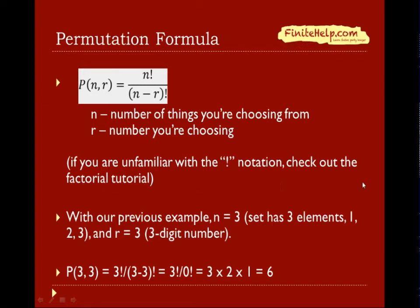So let's look at our previous example. We have n equals 3 because we're choosing from three numbers: 1, 2, and 3. And number we're choosing r is also 3 because we have a three-digit number. So we're choosing three digits. It's important to not get n and r confused, and we're going to talk more about that later as well.